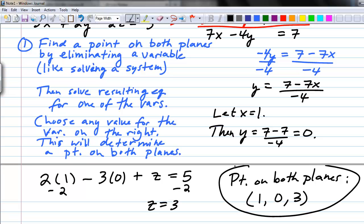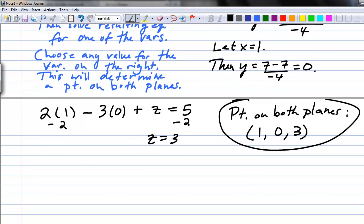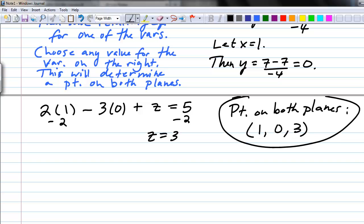From this, we get our point on both planes, which in this case will be x is 1, y is 0, and z is 3. So this is one piece of information we're glad to find.